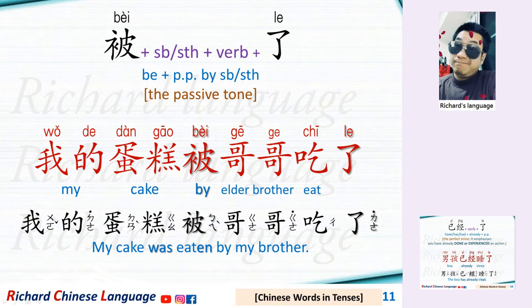被 plus somebody or something, plus a verb, plus 了. This is the passive tense. For example: 我的蛋糕被哥哥吃了 — My cake was eaten by my brother.